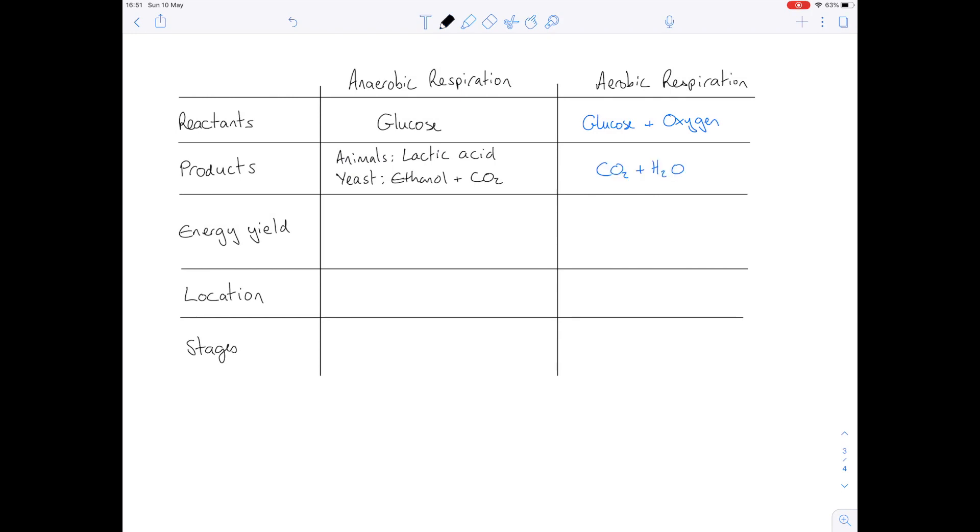How about our energy yield? Remember anaerobic respiration is very inefficient. It creates very little ATP. In fact you're making just two molecules of ATP per one molecule of glucose used.